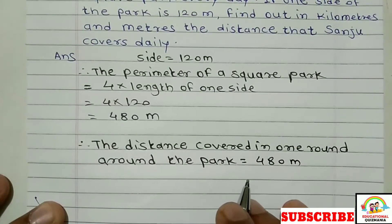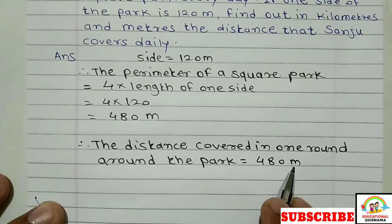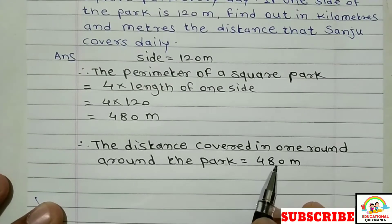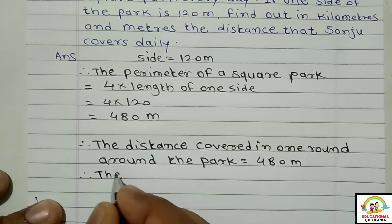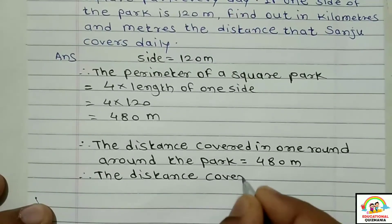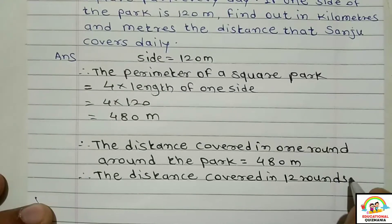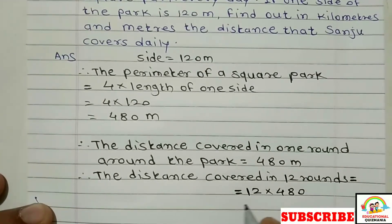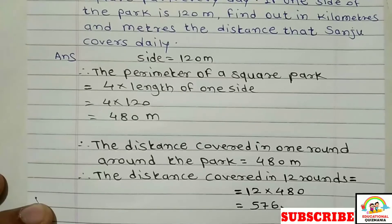Now, Sanju completes 12 rounds around the square park. To find the distance for 12 rounds, we multiply 480 meters by 12. The distance covered in 12 rounds is equal to 12 into 480, which is equal to 5,760 meters.